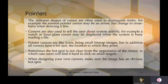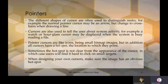Pointer cursors are like icons — small bitmap images — but in addition, all cursors have a hotspot. Whatever icon is used for the cursor, each cursor has a hotspot, meaning the exact XY coordinates. When moving and clicking at a particular location, drawing starts at a particular XY point. When drawing, the line follows those relevant XY points. That exact point is known as the hotspot.